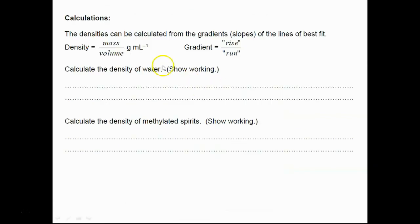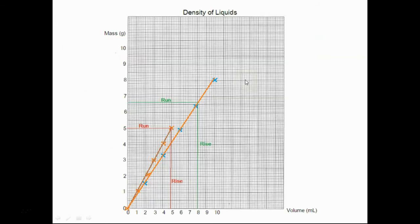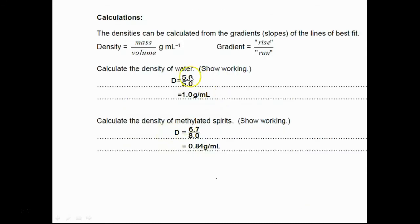Now we can do the calculations. What we need to do as the aim of our experiment is to work out the density. So we need to get the mass divided by the volume, which means that we're getting the gradient of this graph. In other words the rise over the run. And looking at the figures here, reading these figures off from the sides, what we get is 5.0 divided by 5.0, which gives us a value of 1.0 grams per milliliter. And similarly reading off those values, we get a value of 0.84.